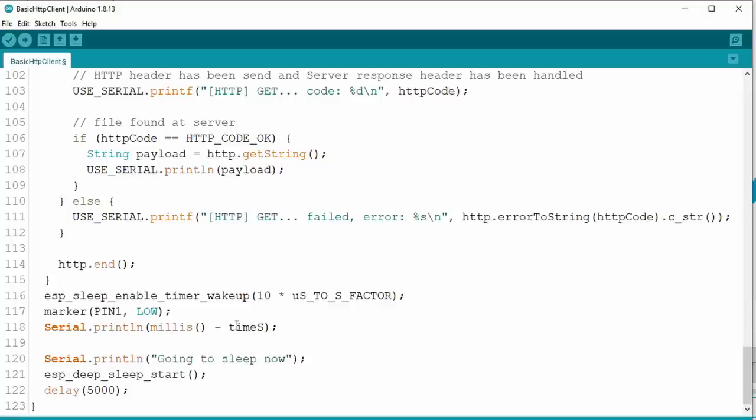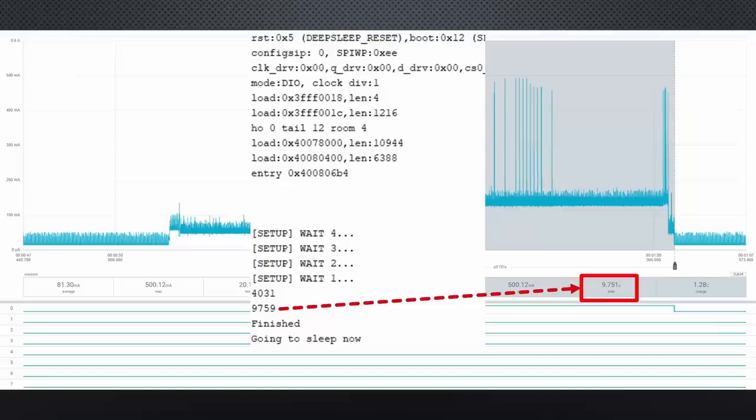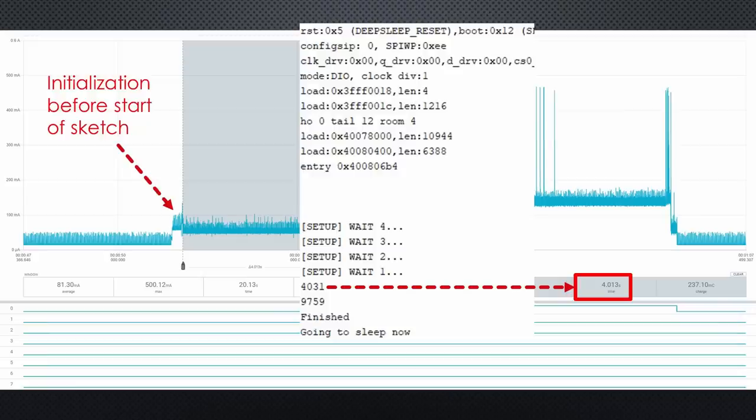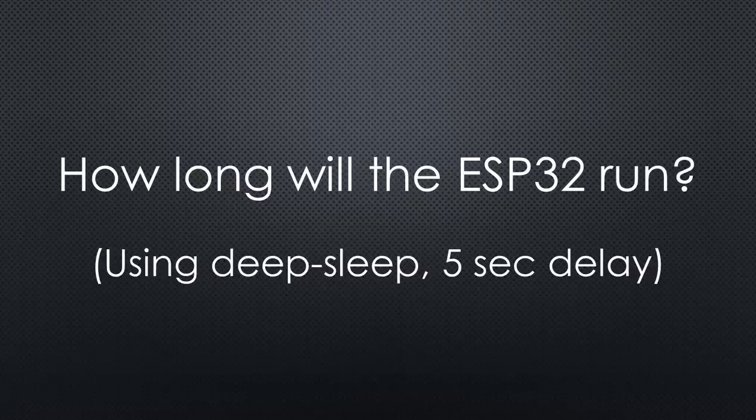I revert to the setup with a USB cable and insert timestamps at the toggle points for a check. Now we can see that the time for the HTTP call is very similar. The time for the setup, however, is quite different. And here we see the difference. The ESP32 does some initialization steps before it starts our sketch.